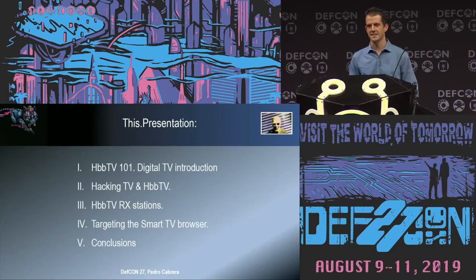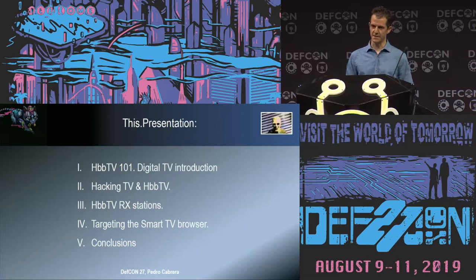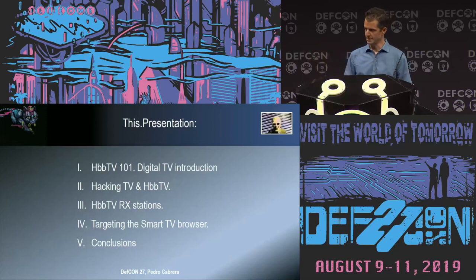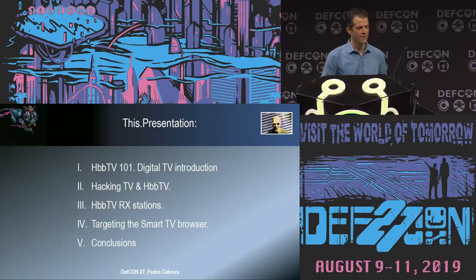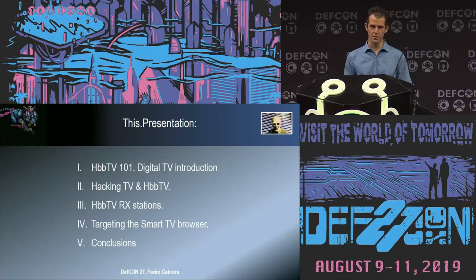I divided this into five main sections. I'd like to introduce you to the HbbTV system and how we can receive digital television on our Linux box. Once we learn how to receive television, we will be able to move forward into the channel injection — we will transmit our own channel. We will play with different receiving stations, antenna facilities, and so on, playing with the attack's scope or impact. And finally, we will move towards the URL injection attack, targeting the smart TV browser, and of course, conclusions.